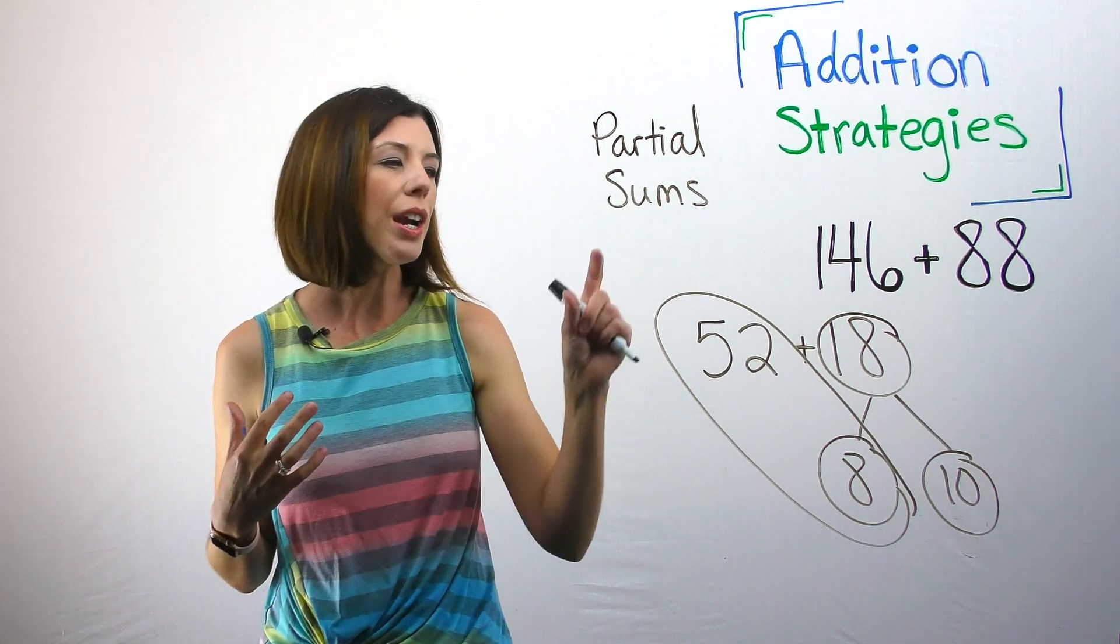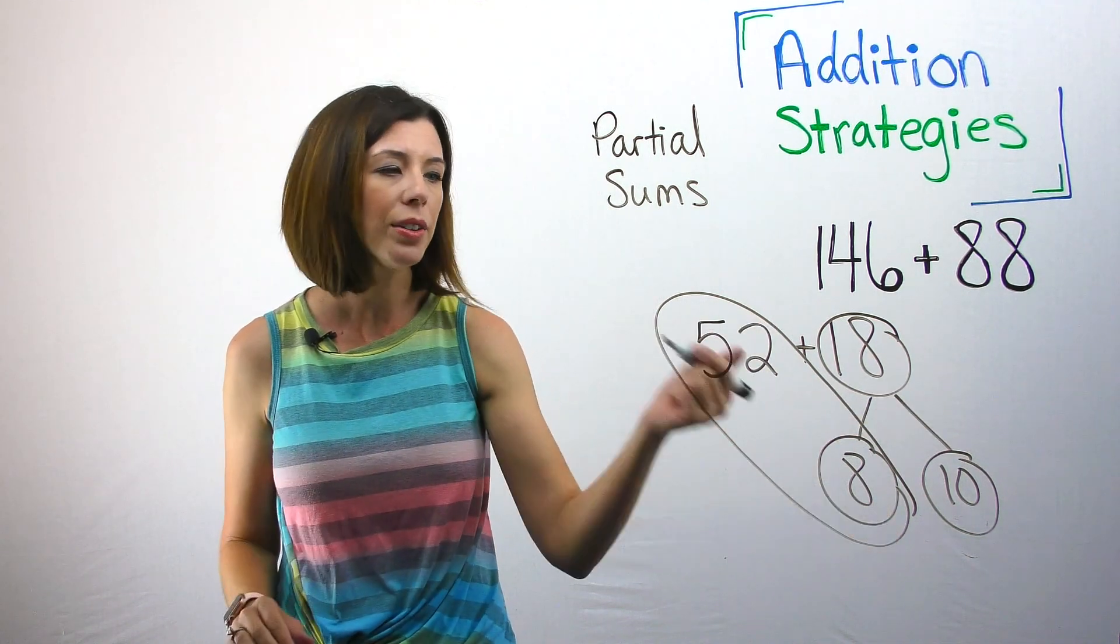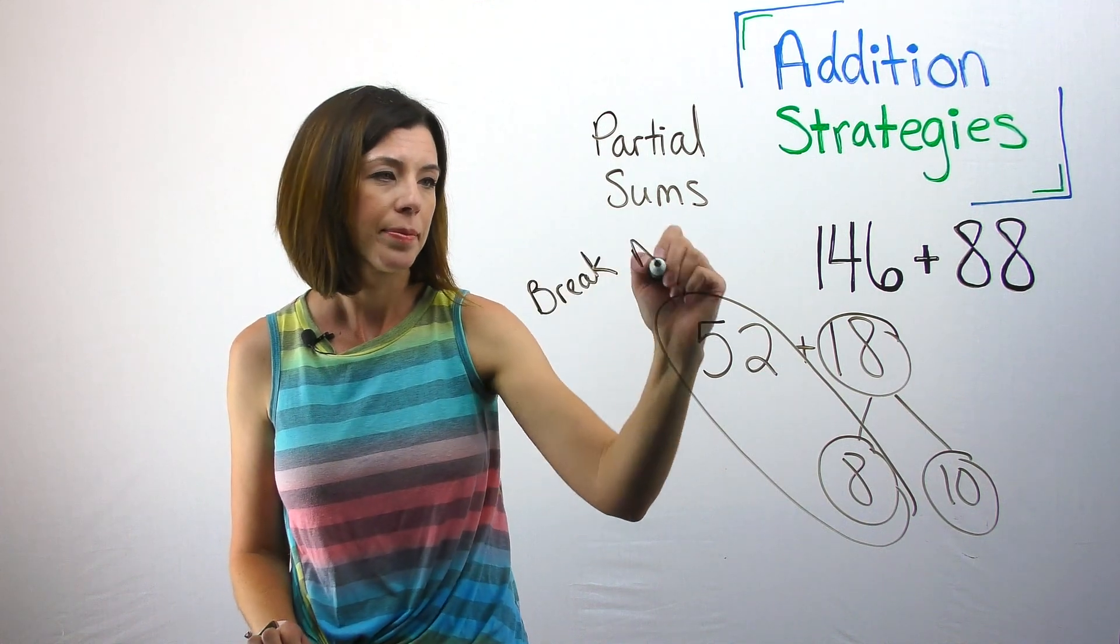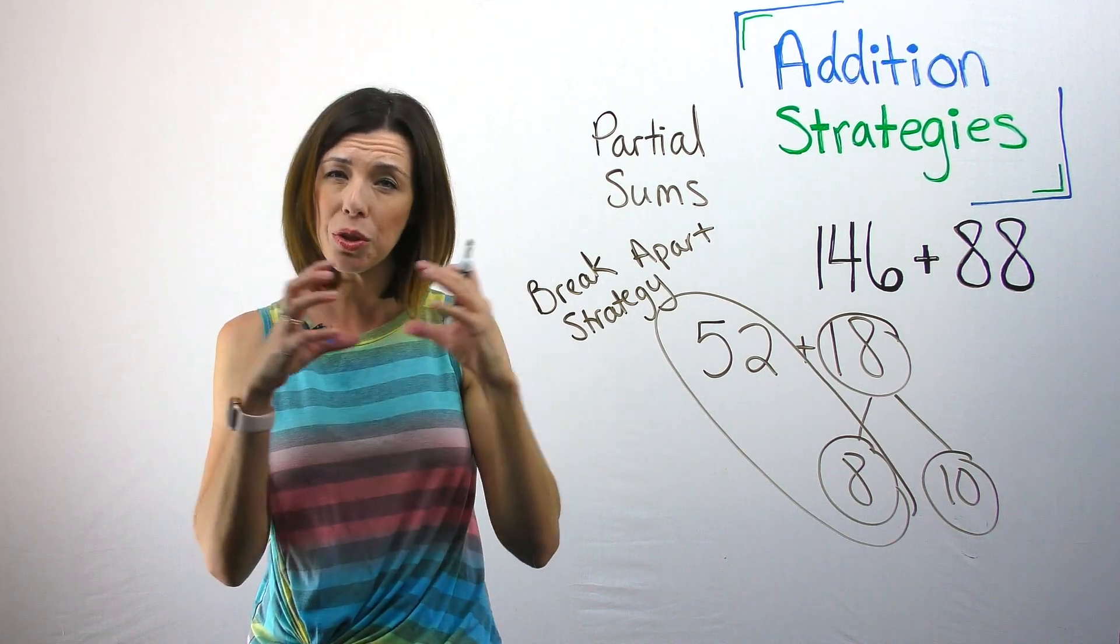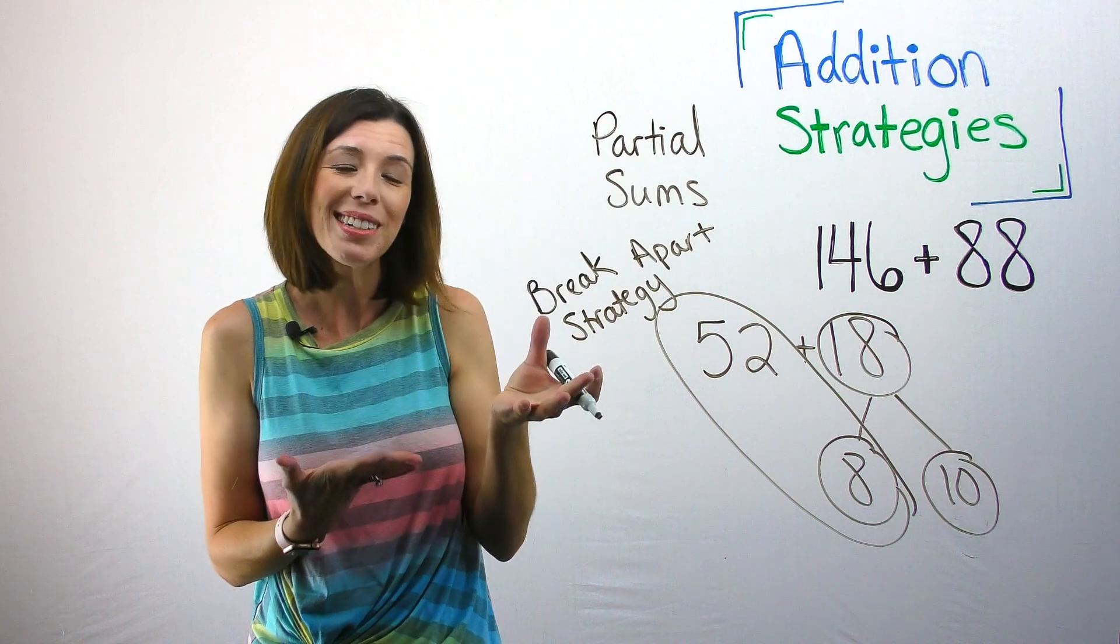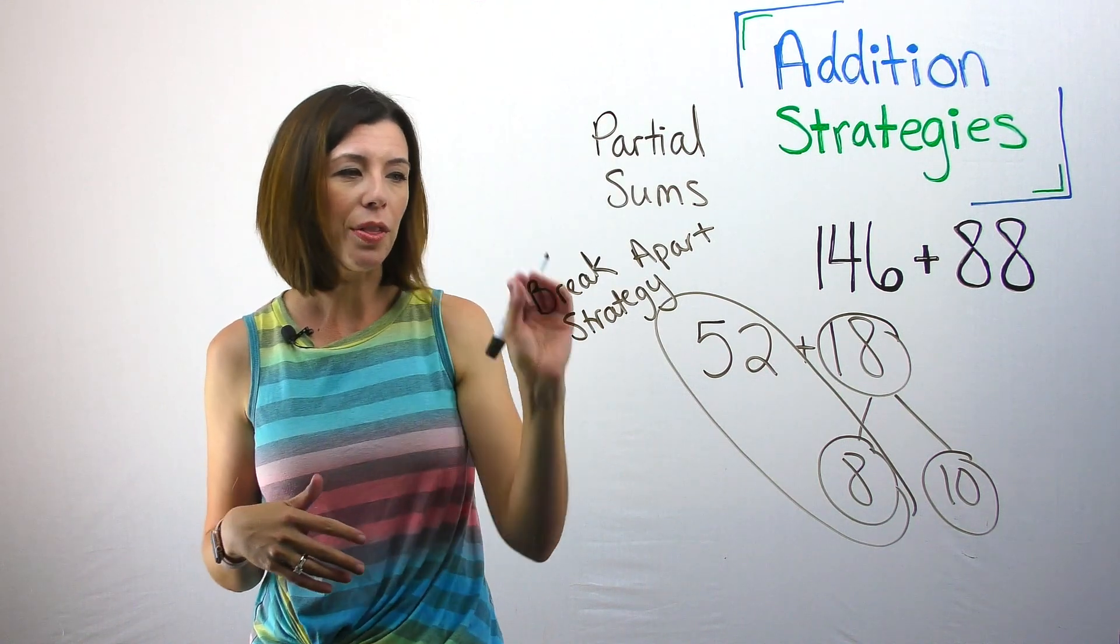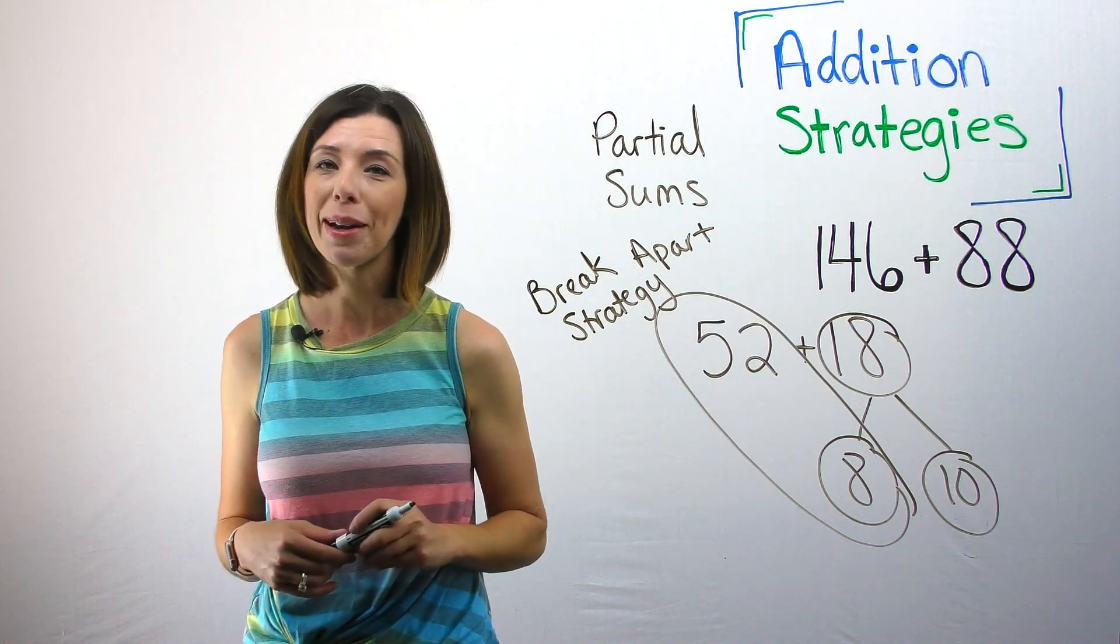The strategy of breaking numbers apart either by place value or sometimes like I did here with my model, we sometimes call that the break apart strategy. Just to give you a better idea, sums means the answer to an addition expression. So partial sums is really saying it's breaking the numbers apart in a way. But just so you know, that is kind of what you might hear in practice for that sort of mathematical model.